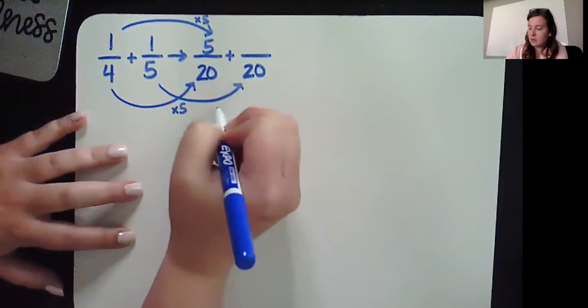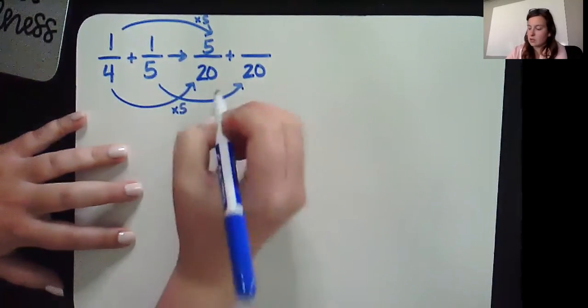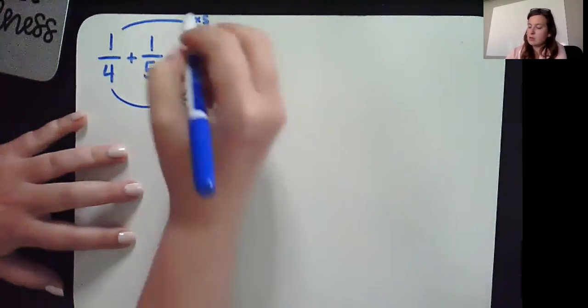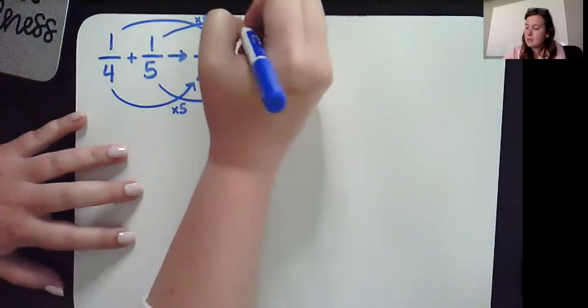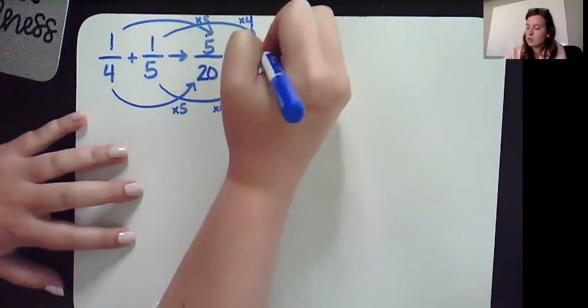To turn the 4 into 20, we multiplied— oops, sorry, to turn the 5 into 20, we multiplied by 4. So we'll do the same thing up top. 1 times 4 is 4.